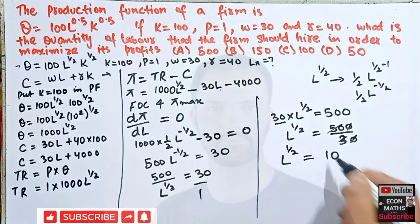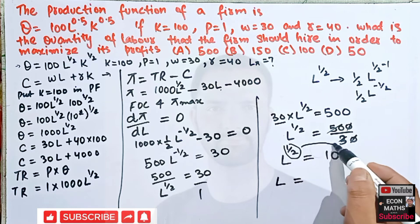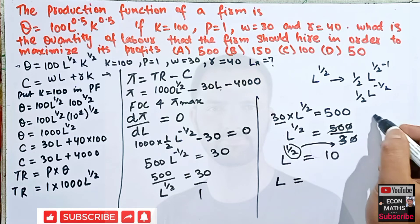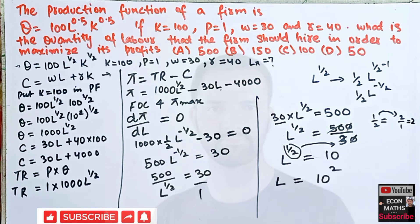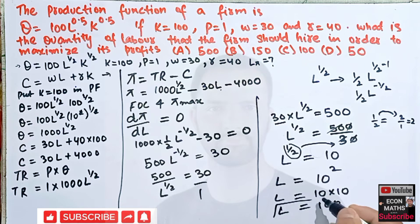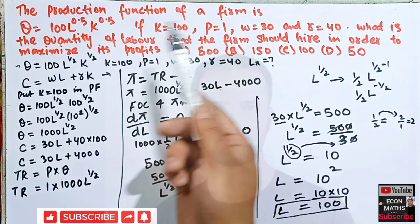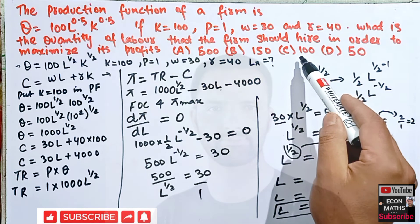So L^(1/2) = 10. To solve for L, we square both sides — the exponent 1/2 becomes 2 when transposed to the right-hand side. Therefore L = 10^2 = 100. The profit-maximizing level of labor is 100, so the correct option is 100.